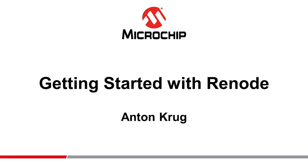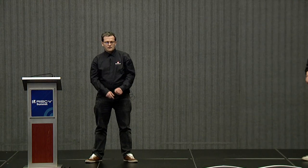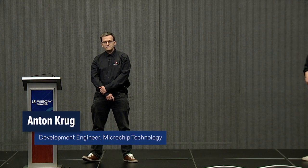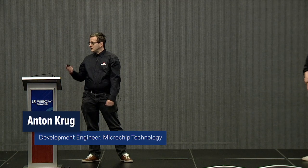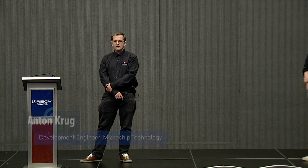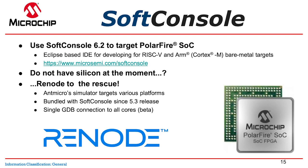I'm Anton Krug, and one thing I do at Microchip is toolchains. We have SoftConsole, which is our Eclipse-based IDE targeting bare-metal RISC-V and ARM targets. There's a link where you can download it and start using it right now. It's usually used to target real hardware devices; however, for users who do not have silicon available, they can use Renode. Renode is made by Antmicro and can simulate various platforms. It has been bundled with SoftConsole for a while.